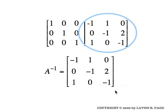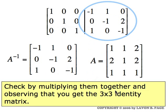Magically, the right side now gives us the inverse matrix. We can read off A inverse simply by copying out the numbers on the right-hand side. You should verify this: go back to the original matrix A and check that A times this matrix really does give you the three by three identity matrix.